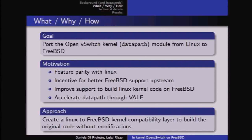A recently added feature in FreeBSD allows replacing the Vale switch's forwarding logic with an arbitrary function, so a module can link in and override it. In this case, we could use the OpenVSwitch forwarding logic to decide what to do with a packet, while Vale provides an extremely fast data plane to move it around.